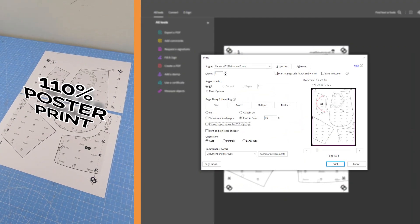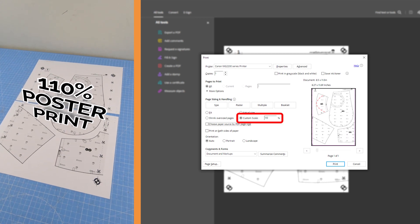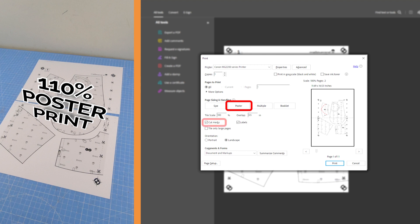To enable this, open the PDF file, type in the required scale, select poster print checkbox as well as cut marks and labels, set the overlap value to half an inch, and click print.